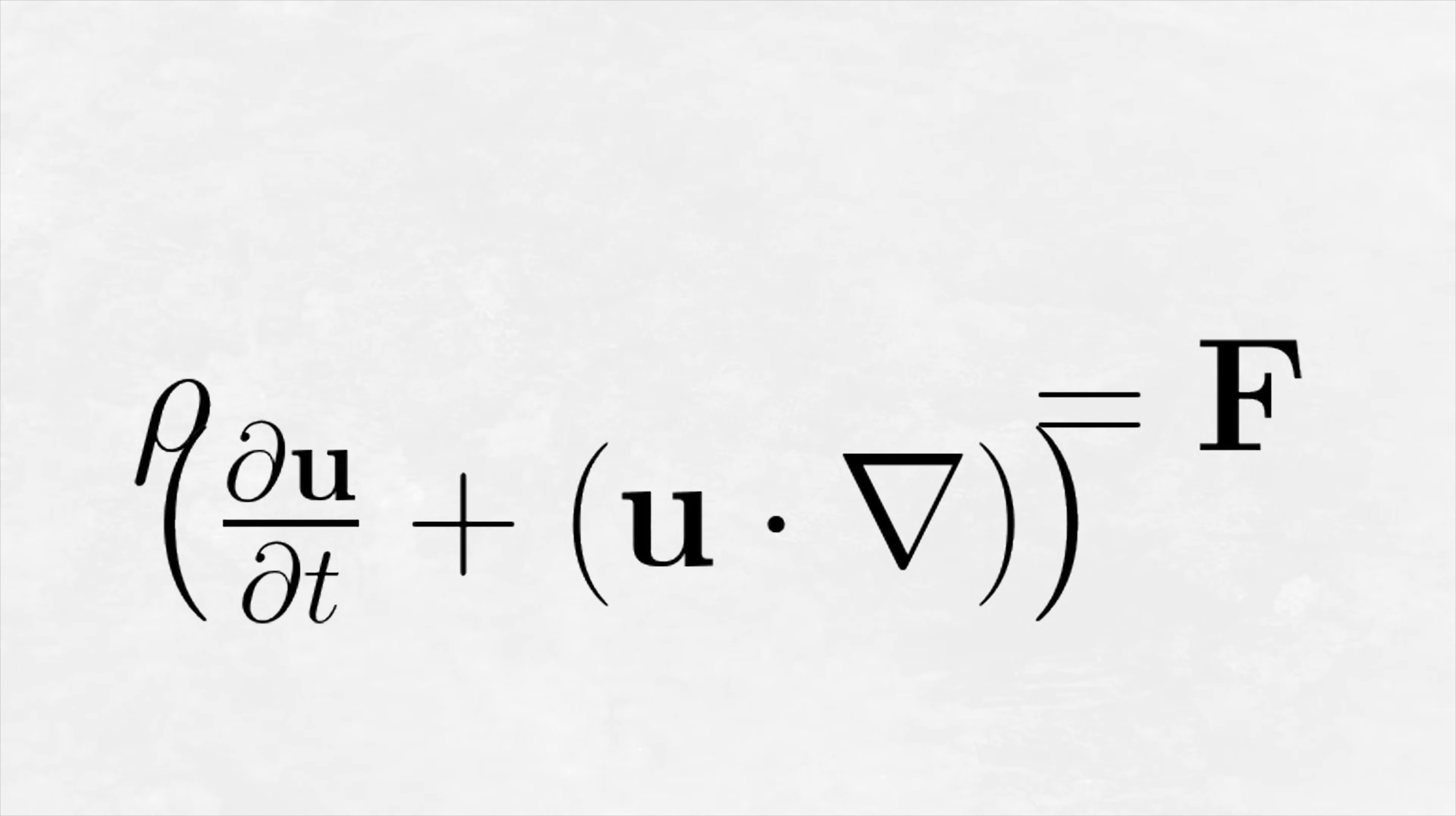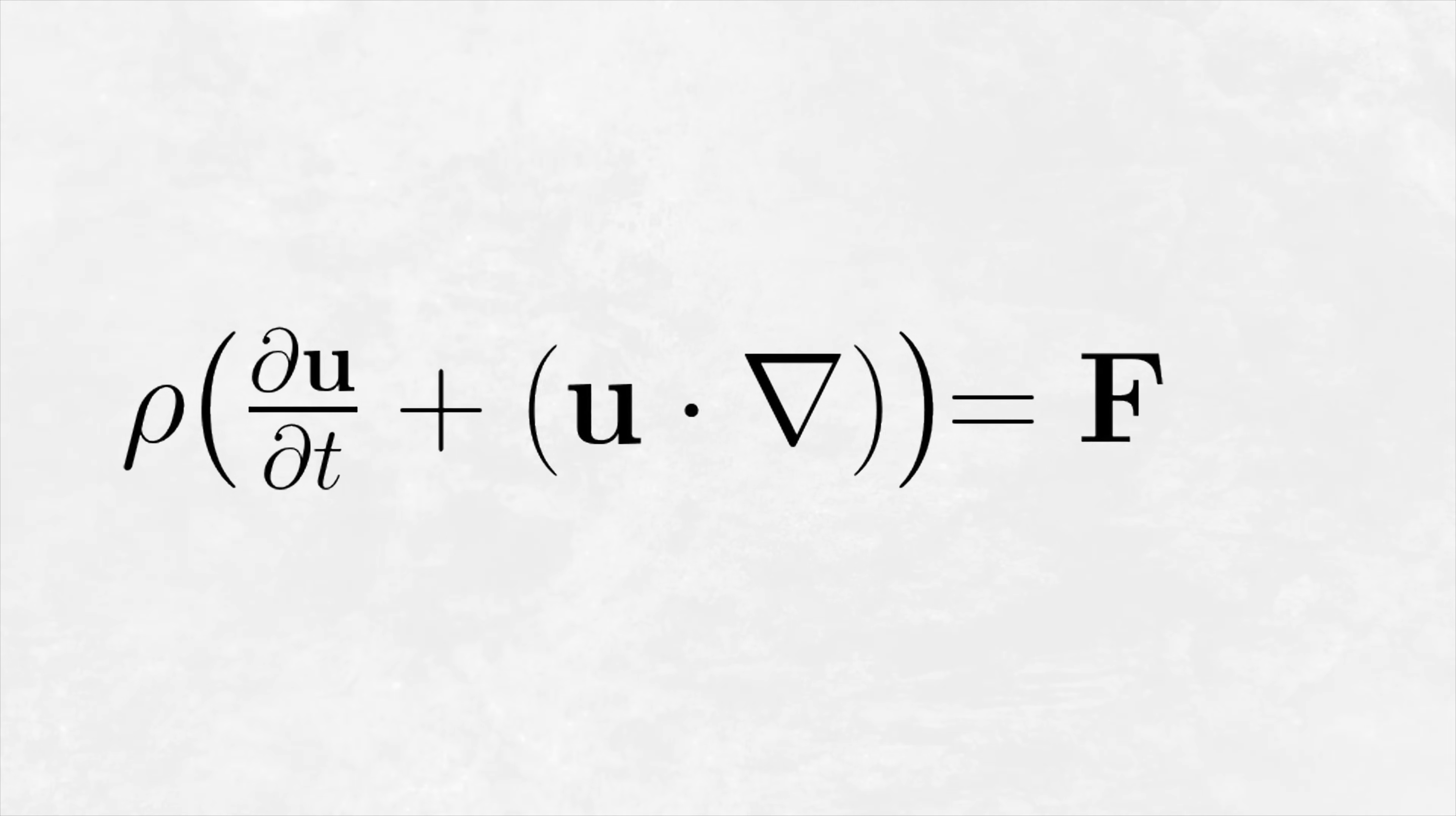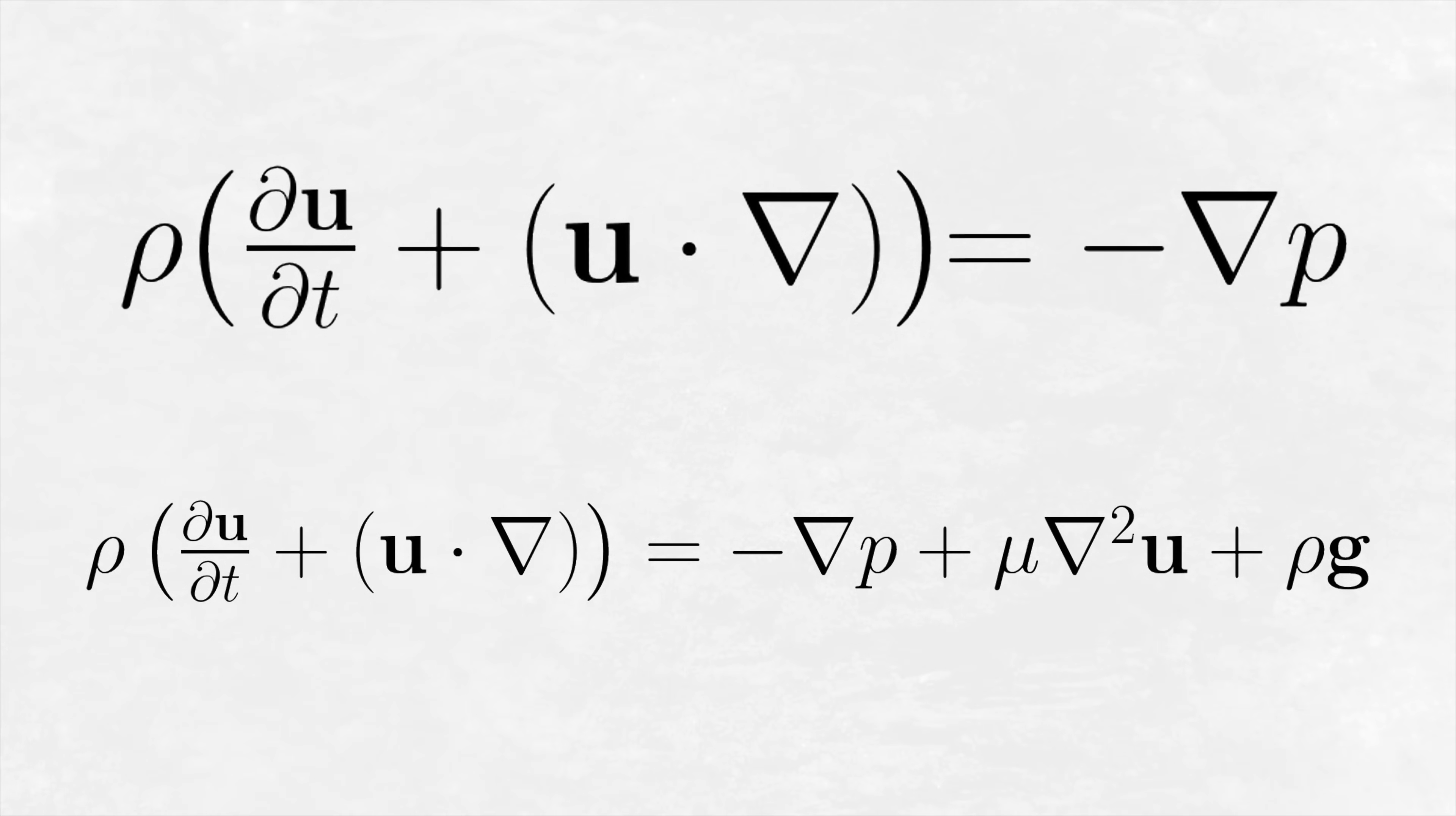The material derivative is the Eulerian derivative, but with some extra accounting on the end, just to do with how the fluid element is moving around. Applying that to Newton's second law acting on a fluid element gives us an equation that describes how fluid moves in a box, or anywhere else you'd like to put a fluid. You can see that this is basically where the Navier-Stokes equation comes from, but with a few extra bits.